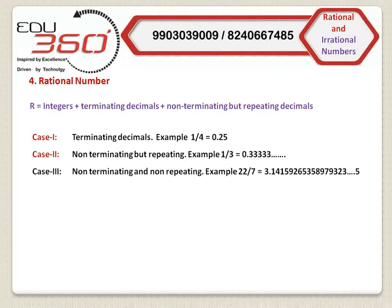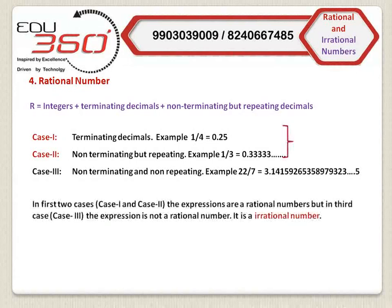Now come to case three: non-terminating and non-repeating decimals. For example, if we divide 22 by 7, we will get a non-terminating and non-repeating decimal expression, which equals 3.1415926... Here you can notice that no digit is repeating in a regular manner. In the first two cases, that is case one and case two, the expressions are rational numbers. But in the third case, the expression is not a rational number, as it has a non-terminating and non-repeating decimal expression.